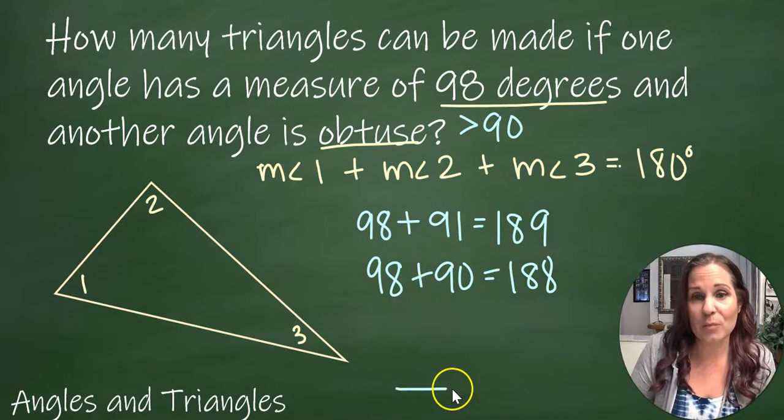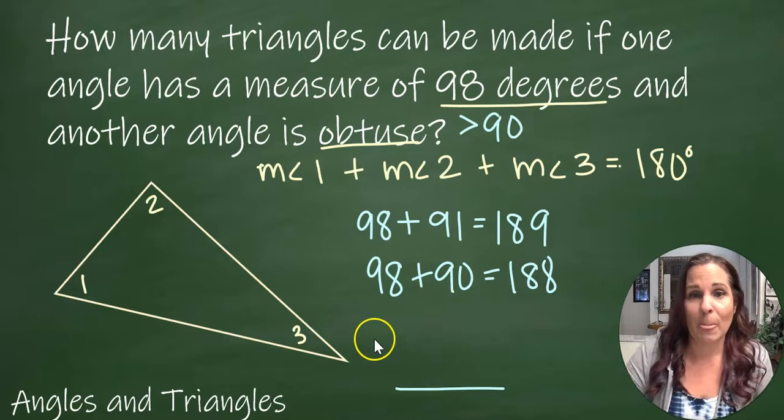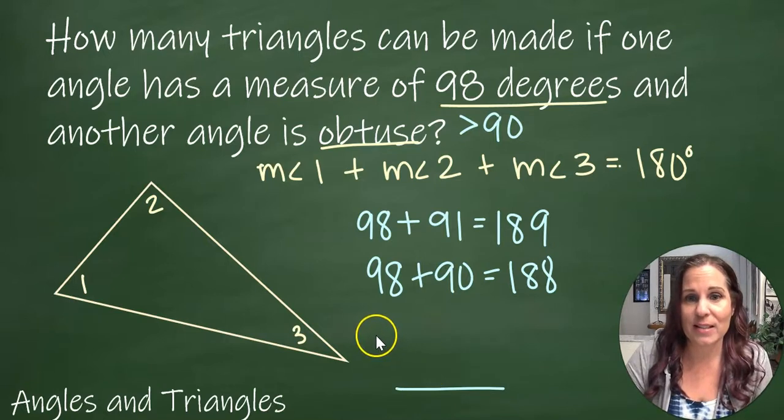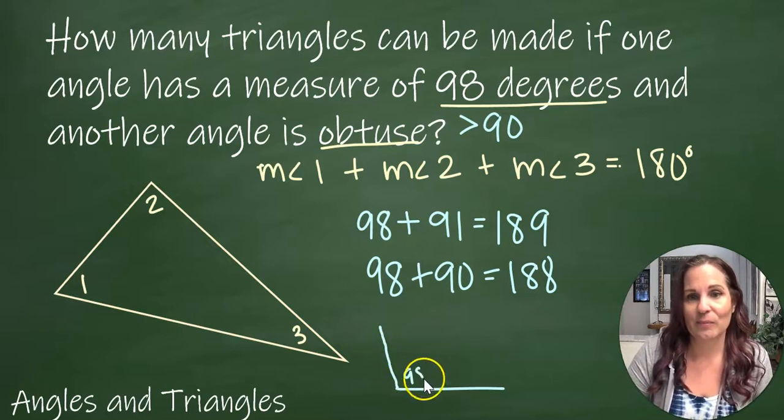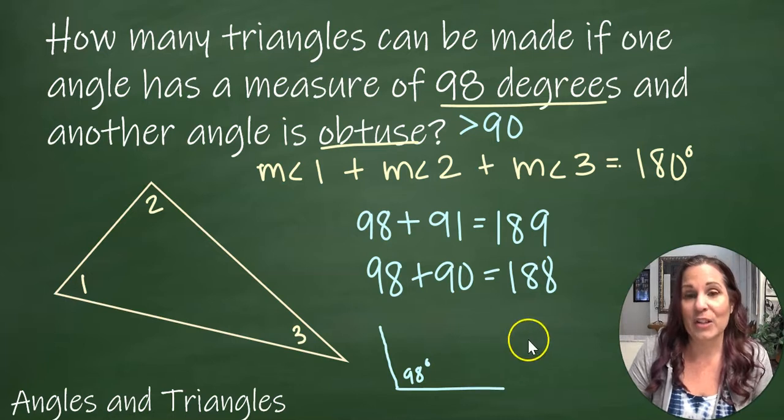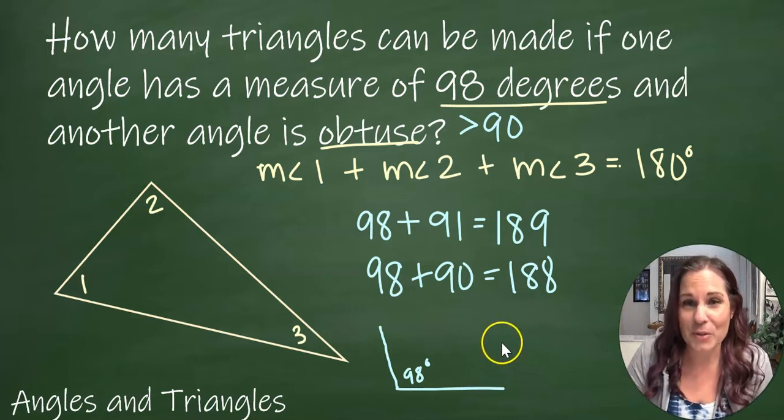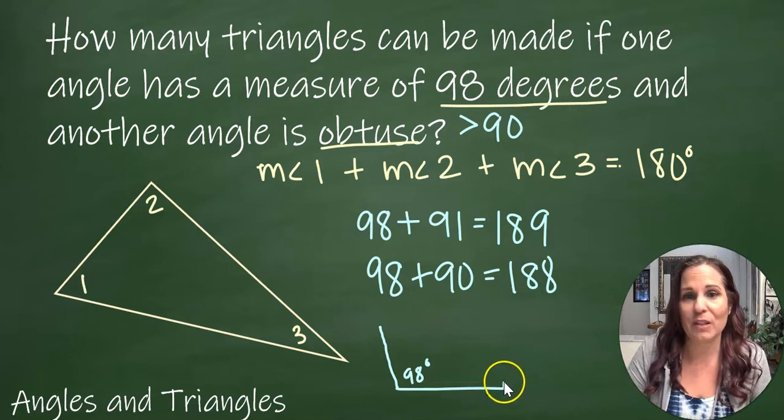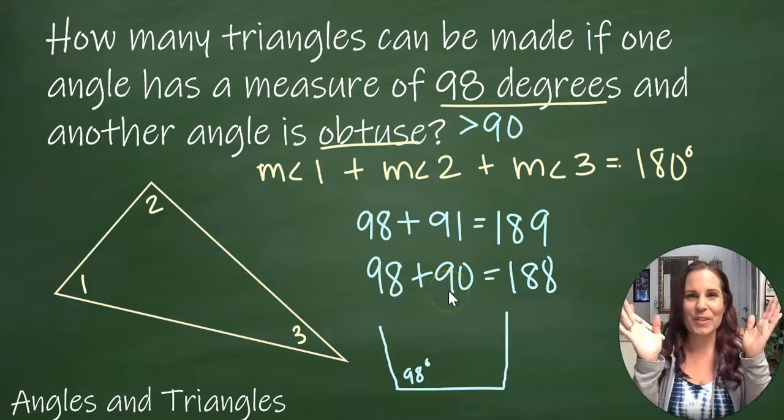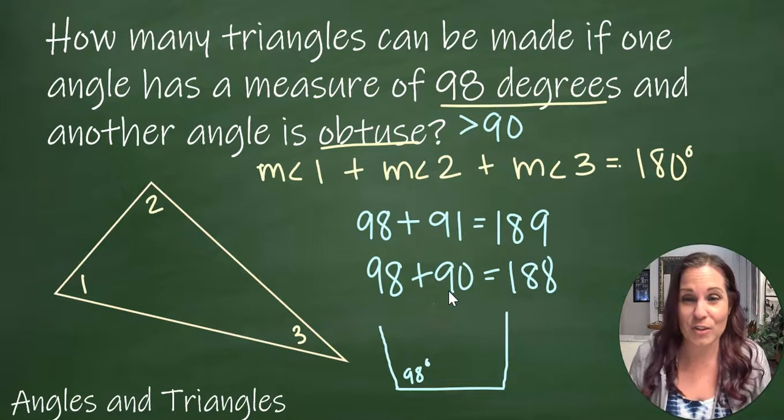Think about what this would look like. If my base of my triangle is here and I have one angle that's, let's say, 98 degrees here, so maybe something that looks like that. And I have another angle on this side that's also obtuse, also greater than 90, even if it's just barely greater than 90.